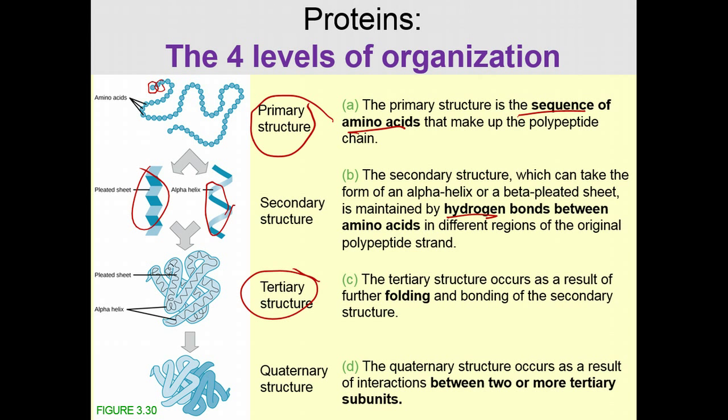Secondary structures fold together into tertiary structure — the full three-dimensional shape of the protein. A protein's function is largely based on this shape. Not all proteins have quaternary structure, but when more than one tertiary polypeptide chain joins together into one molecule, that is called quaternary structure.